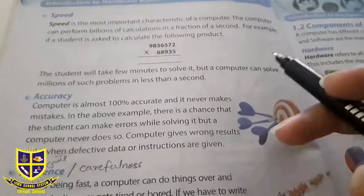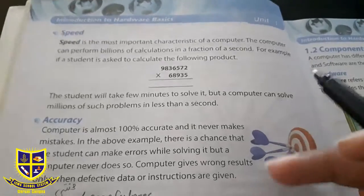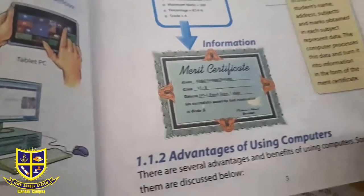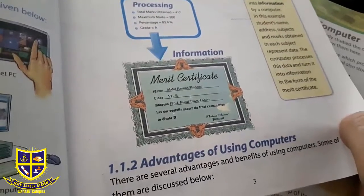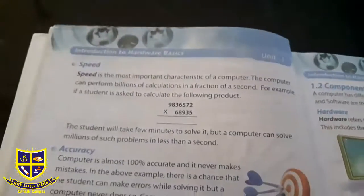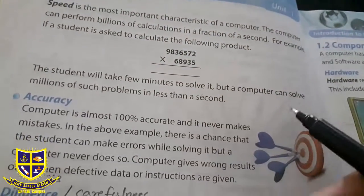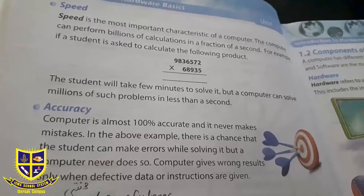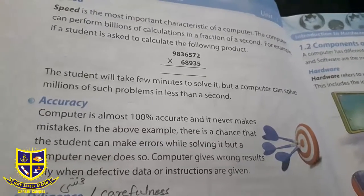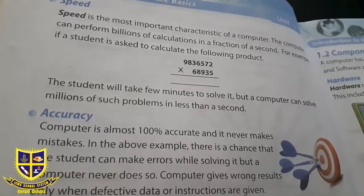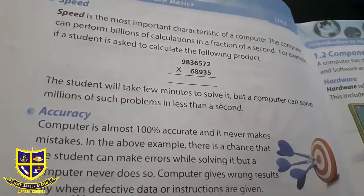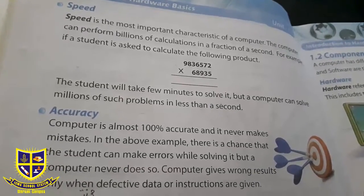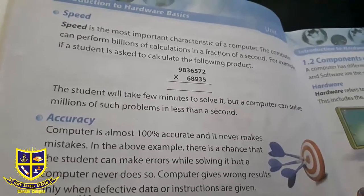यह आज के हमारे दो topics थे — data and information और advantages of using computers। Practice के लिए: आपके पास computer हो या smartphone, calculator तो सबके पास होता है। आप एक multiplication या division का question खुद graph copy पर solve करें और time note करें। फिर वही command calculator को दें और देखें कि दोनों में कितना time का difference है।